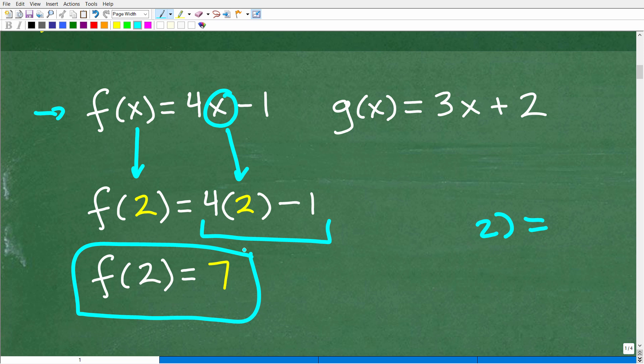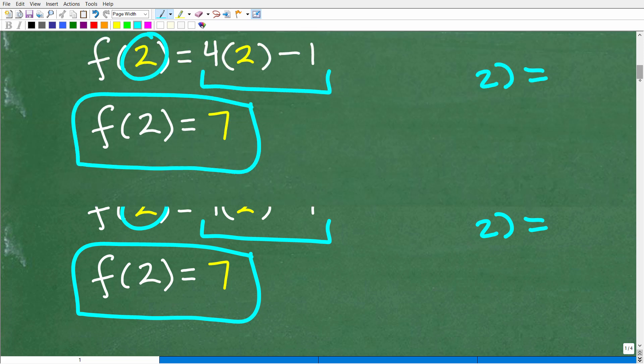Okay, so that's just a basic example of evaluating a function. Now, we need to understand this because we're going to be evaluating this function not with a number, but with another function. And that is the whole idea behind a composite function.